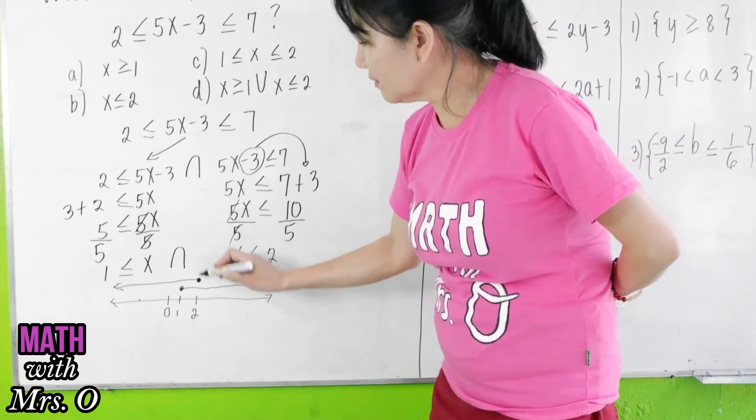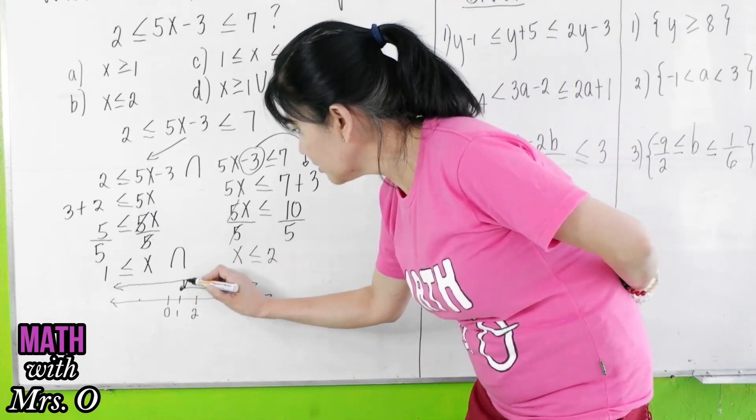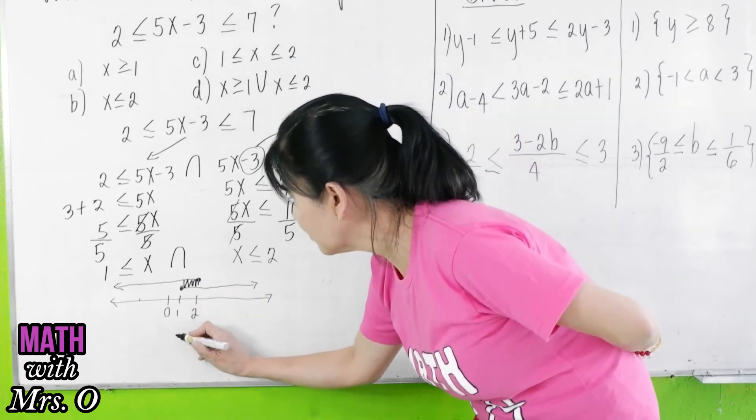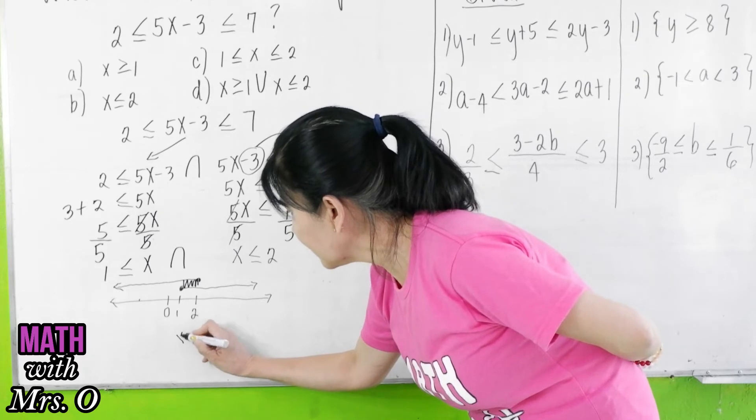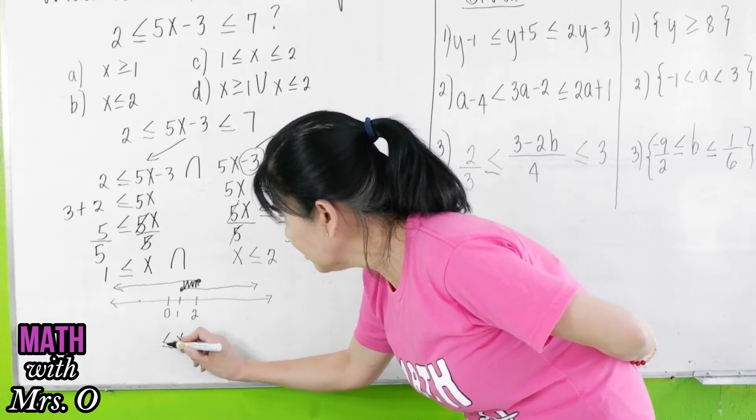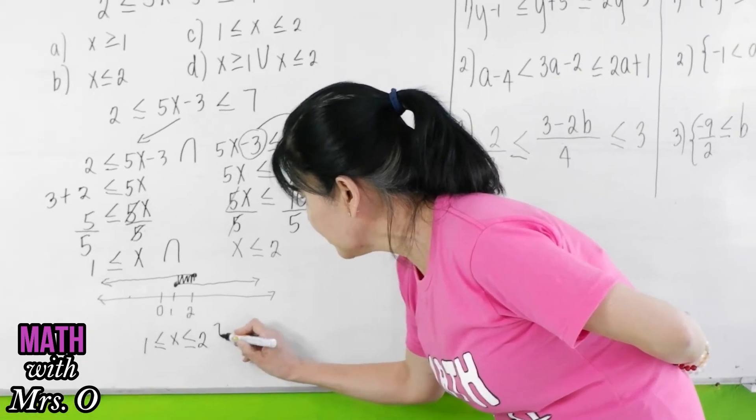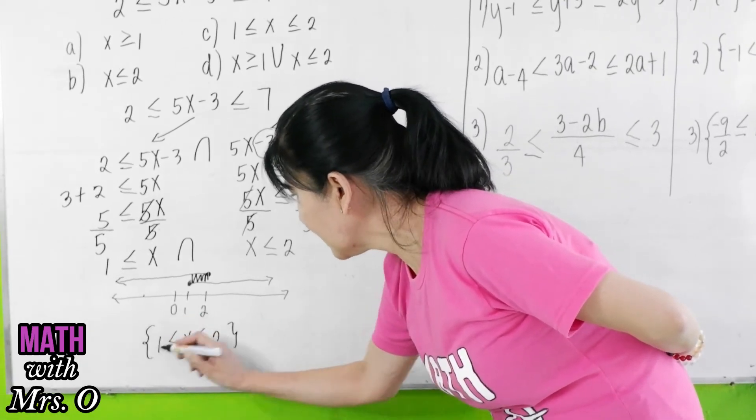But we want the intersection, so the intersection will be the one at the middle. What is this? This is now denoted by x is greater than or equal to 1 and less than or equal to 2. So this is our final answer.